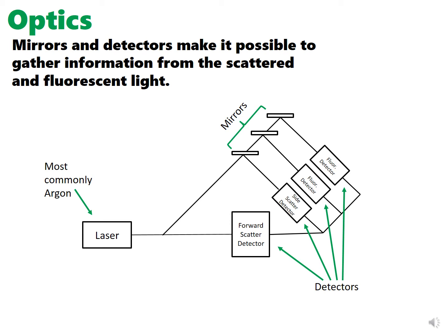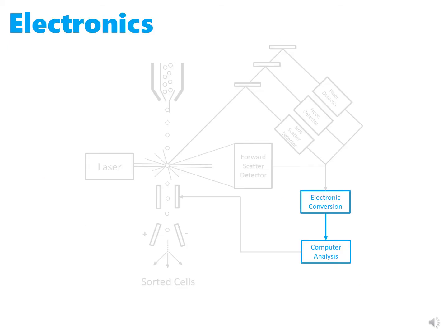A system of filters ensures that each photodetector receives the appropriate wavelengths of light. The electronic system converts photons to photoelectrons and converts this analog signal to a digital one.